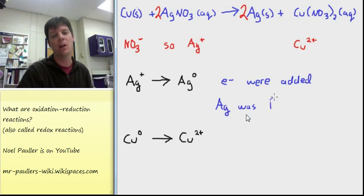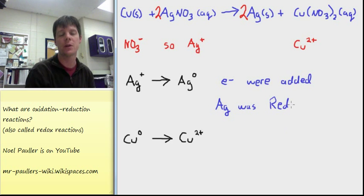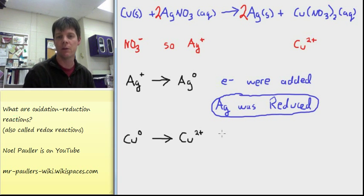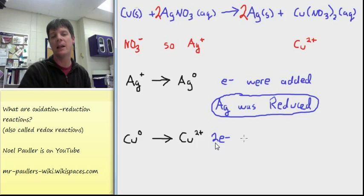This means that silver was reduced. The addition of an electron, which is negatively charged, will lower the charge, going from positive to zero. The copper went from being neutral to having a positive charge. This means that it actually lost two electrons.